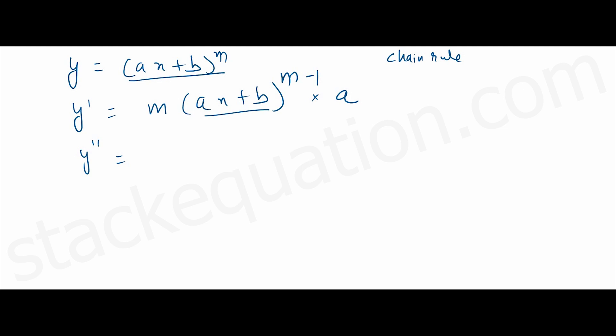Let's find the second derivative. The second derivative is m(m-1)·(ax + b)^(m-2)·a², because we differentiate (ax + b) again, so it combines with the a which was there in the first step.